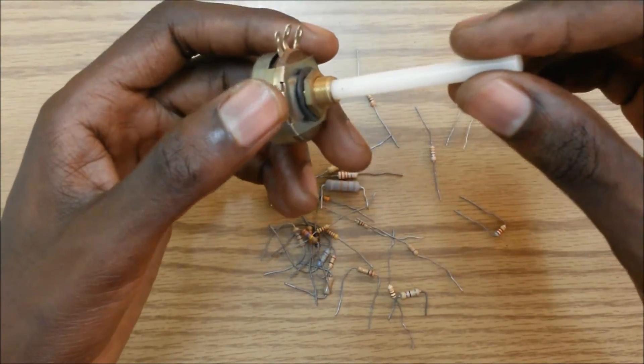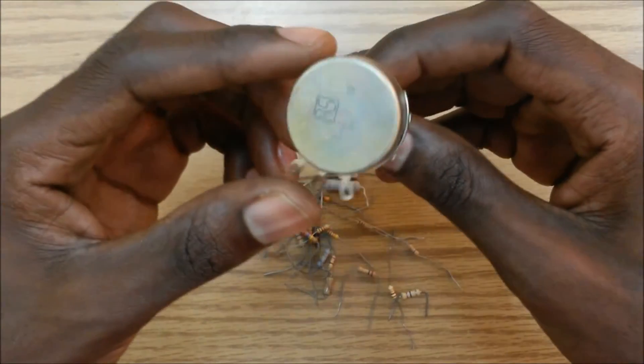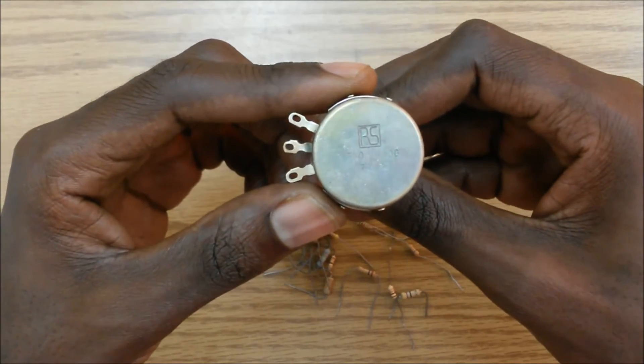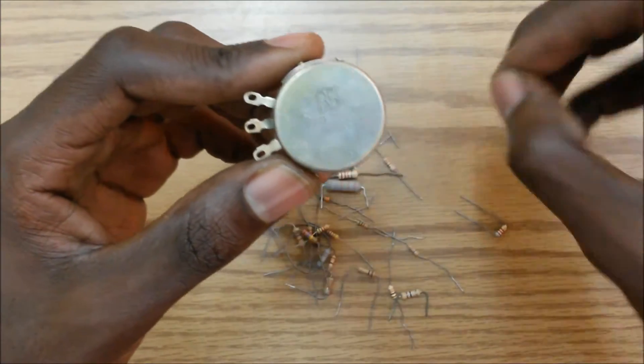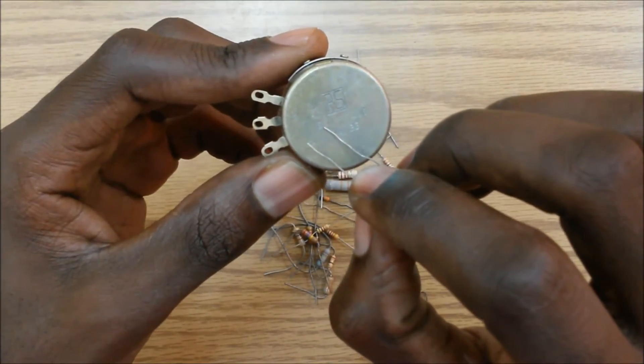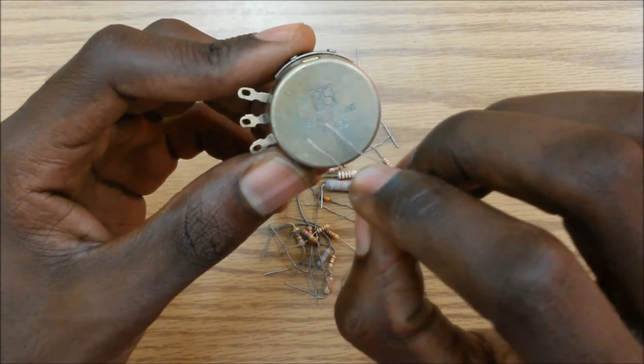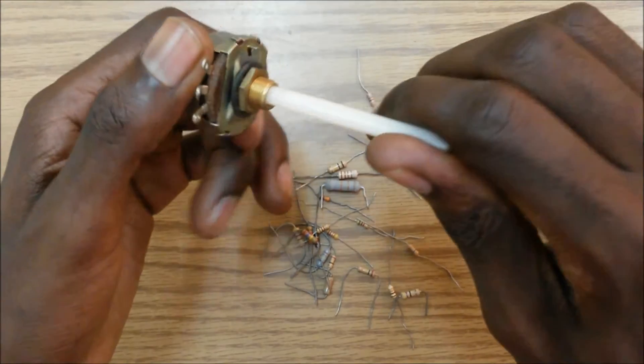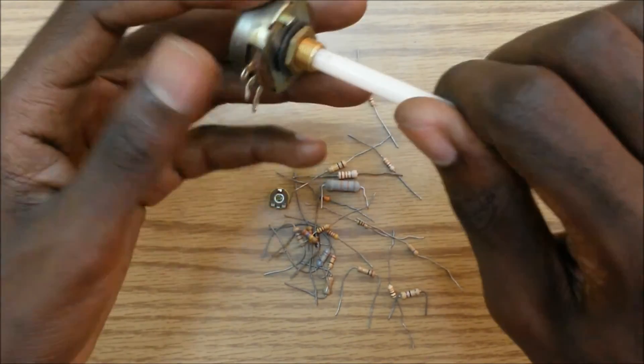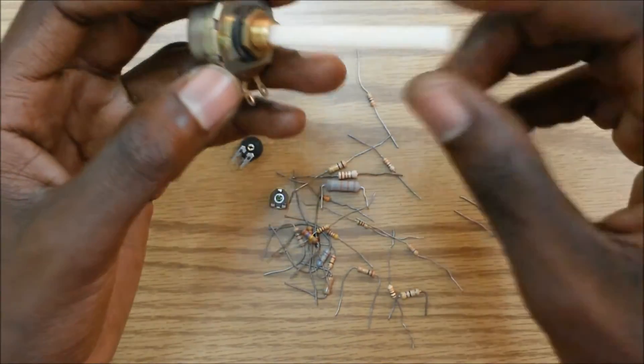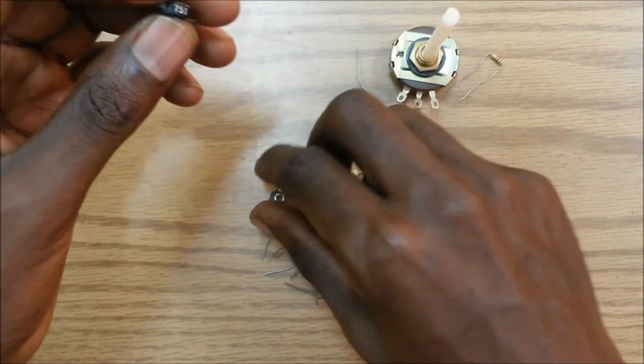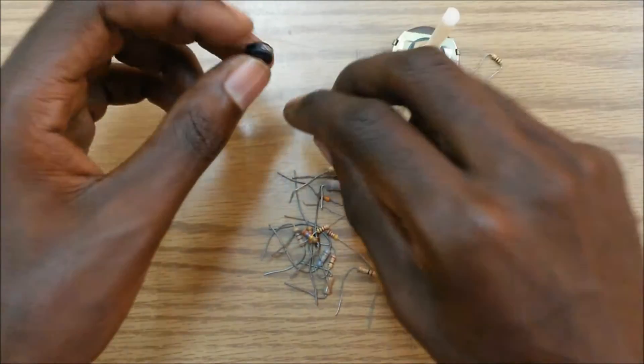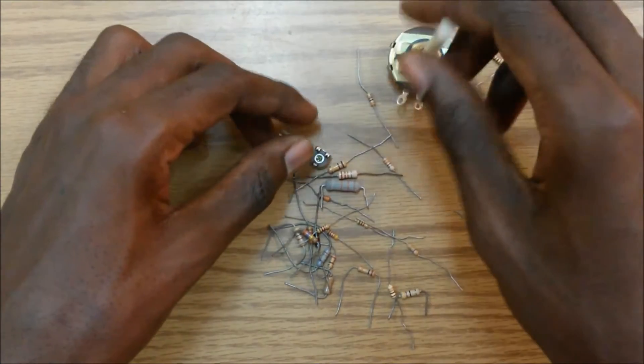So for example, this resistor here is rated at a five kilo-ohm resistor based on the thing here - five kilo-ohm resistor. So it can go from zero right up to about five kilo-ohms. And then these are some other variable resistors.